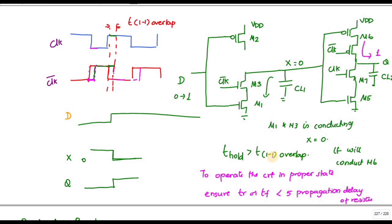To make the circuit operate properly, there may be a possibility that the pull-down and pull-up transistors turn on simultaneously for a few nanoseconds, creating a path between VDD and ground. To avoid this condition, we must ensure that the rise time and fall time are approximately smaller than five times the propagation delay of the circuit.